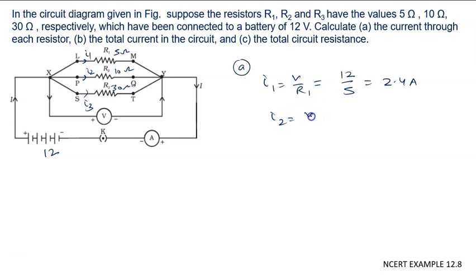I2 is given by V upon R2, it is 12 upon 10, that is 1.2 ampere.